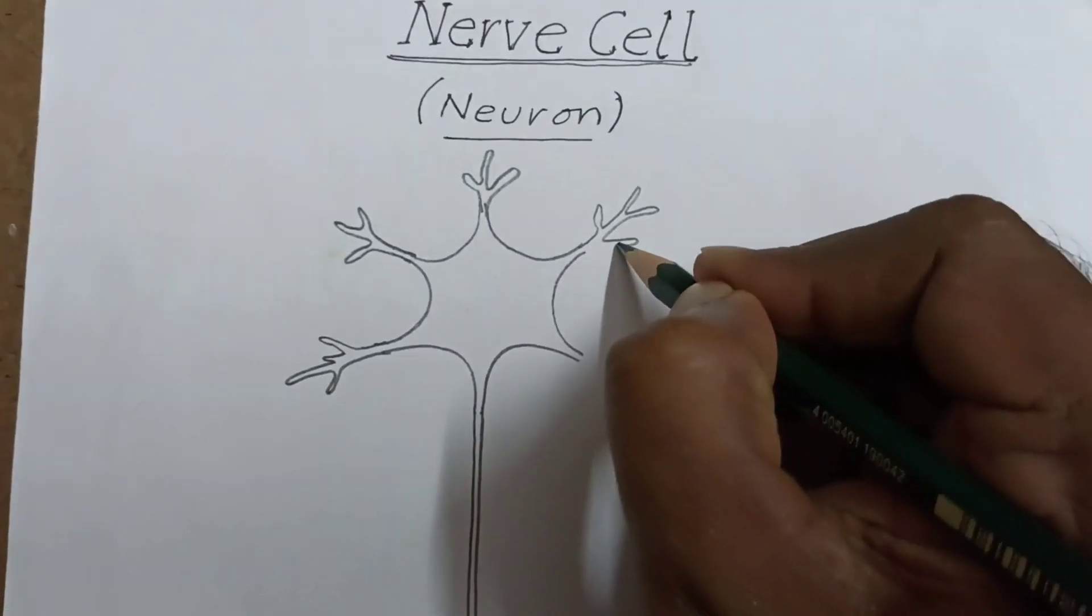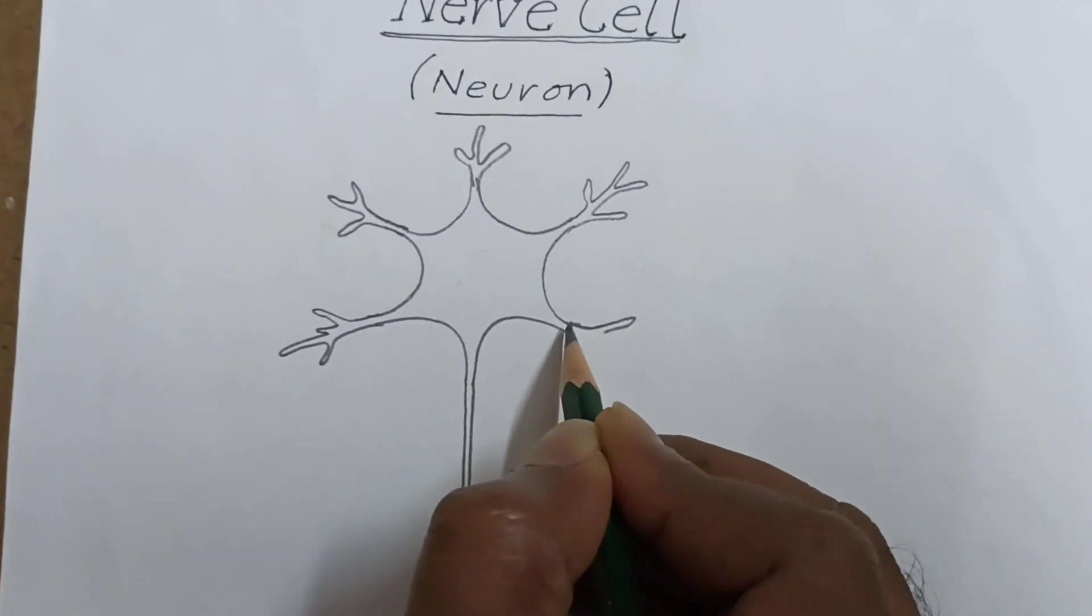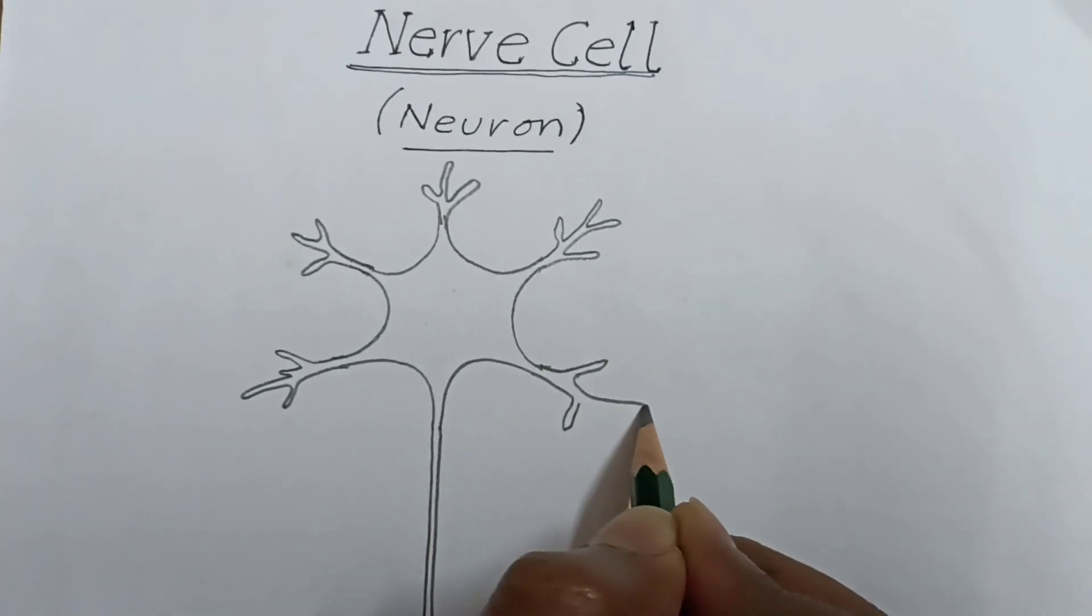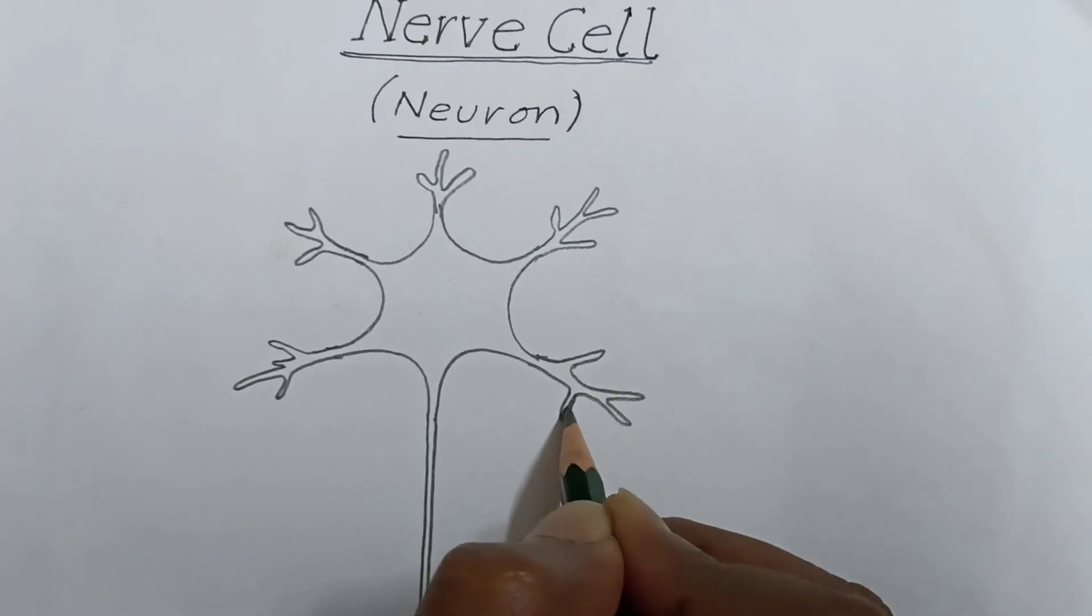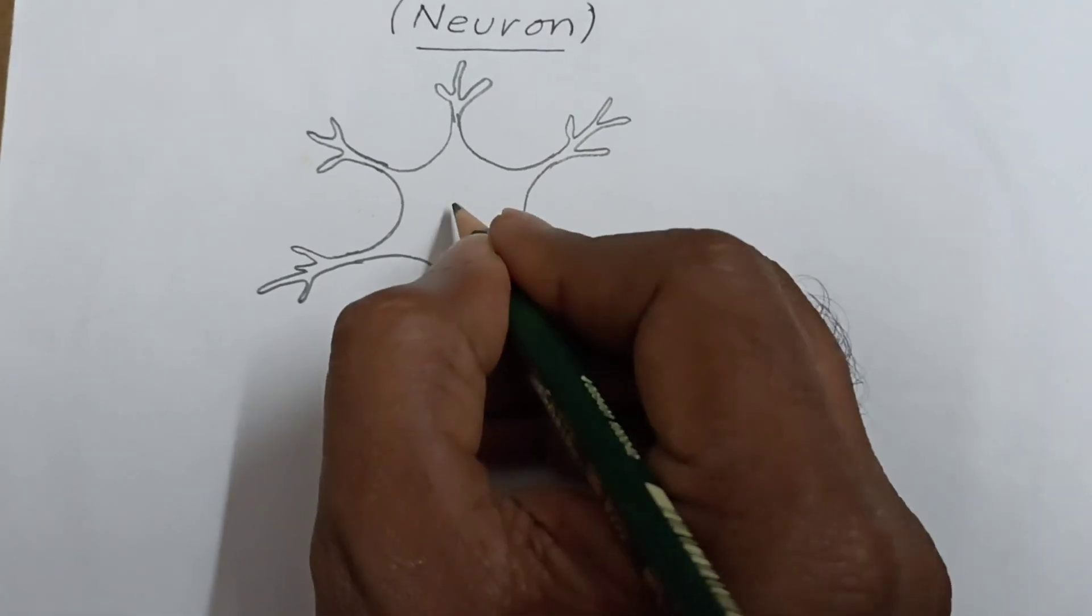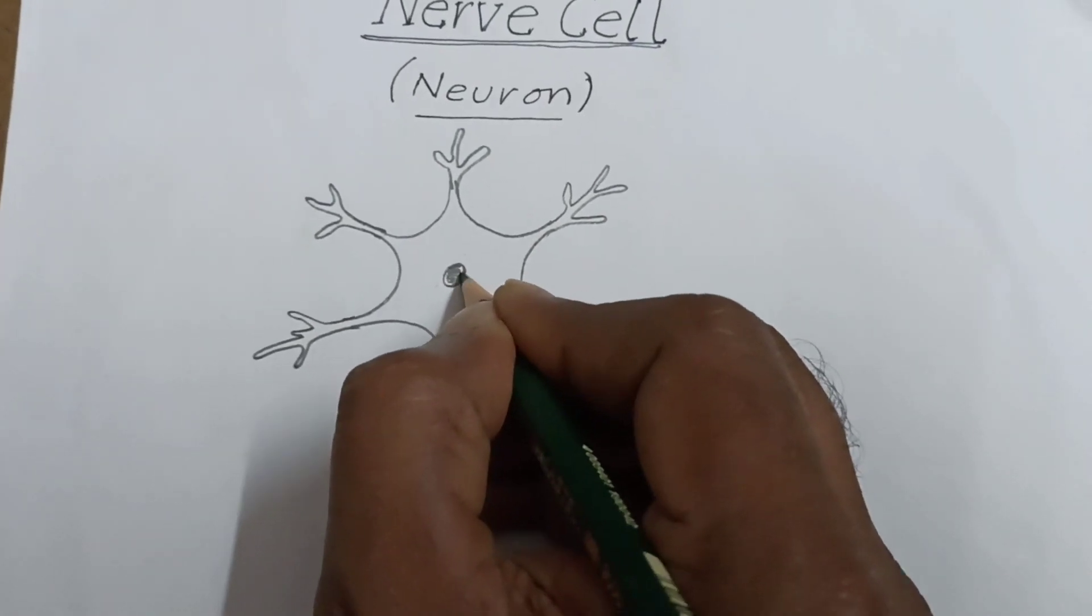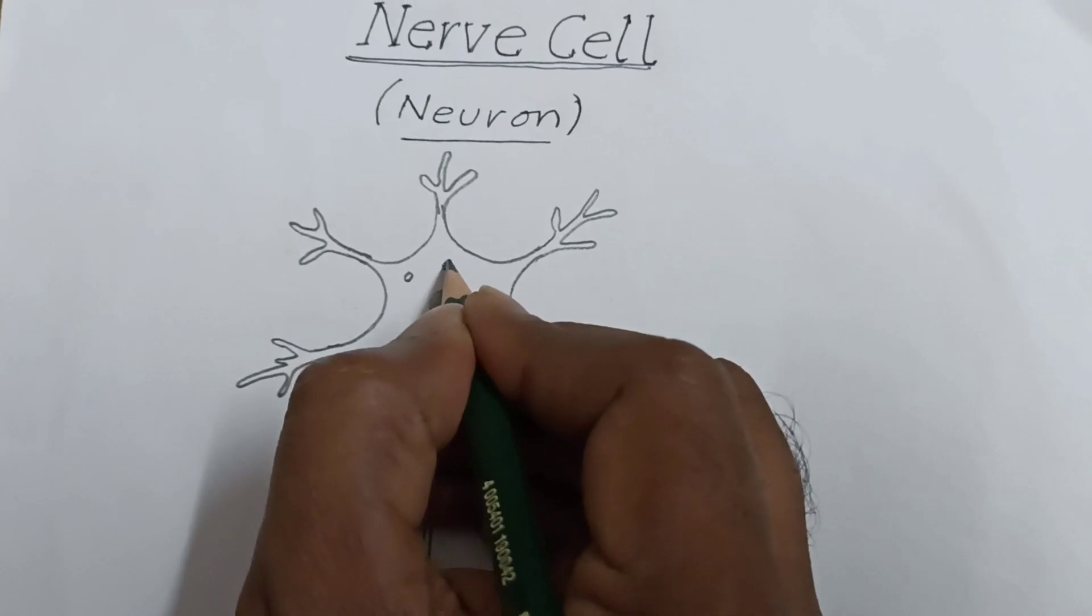These are dendrites. It looks like branches. This is nucleus. Okay, now I am drawing granules.